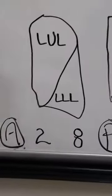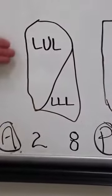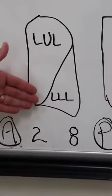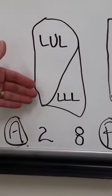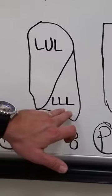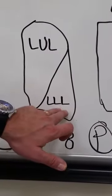If we're looking at the left hand side, again this is anterior, posterior, the entire upper portion is the left upper lobe. Again this is the axilla and then the left lower lobe here.